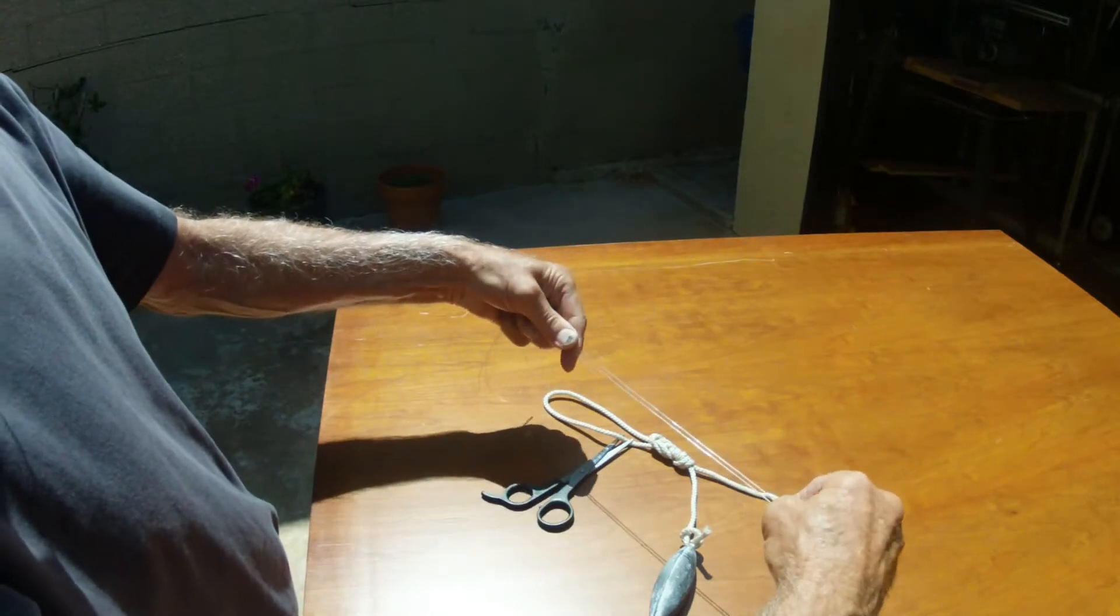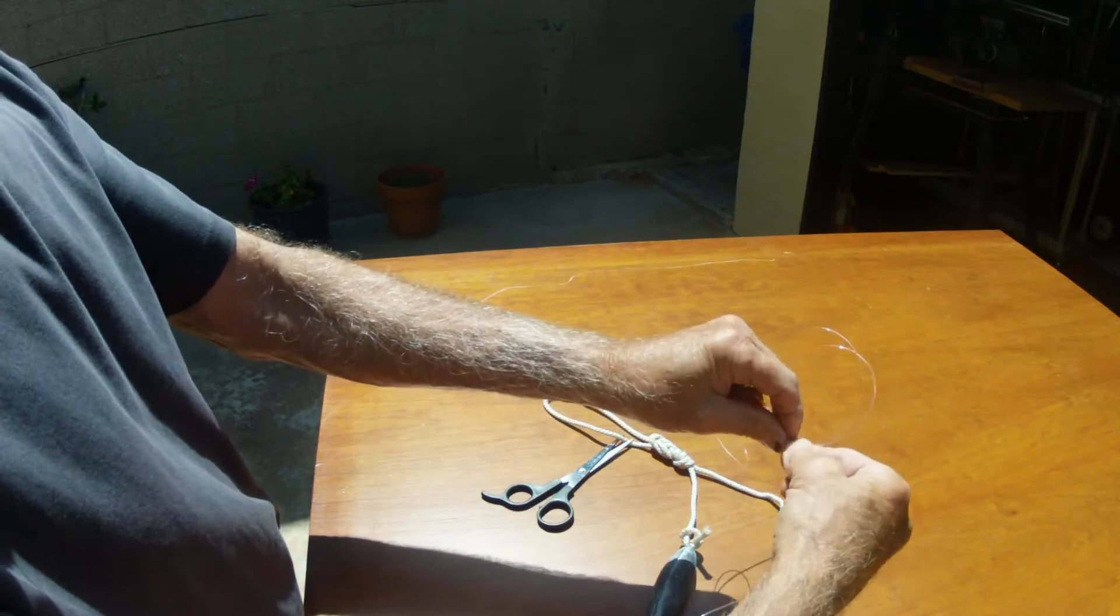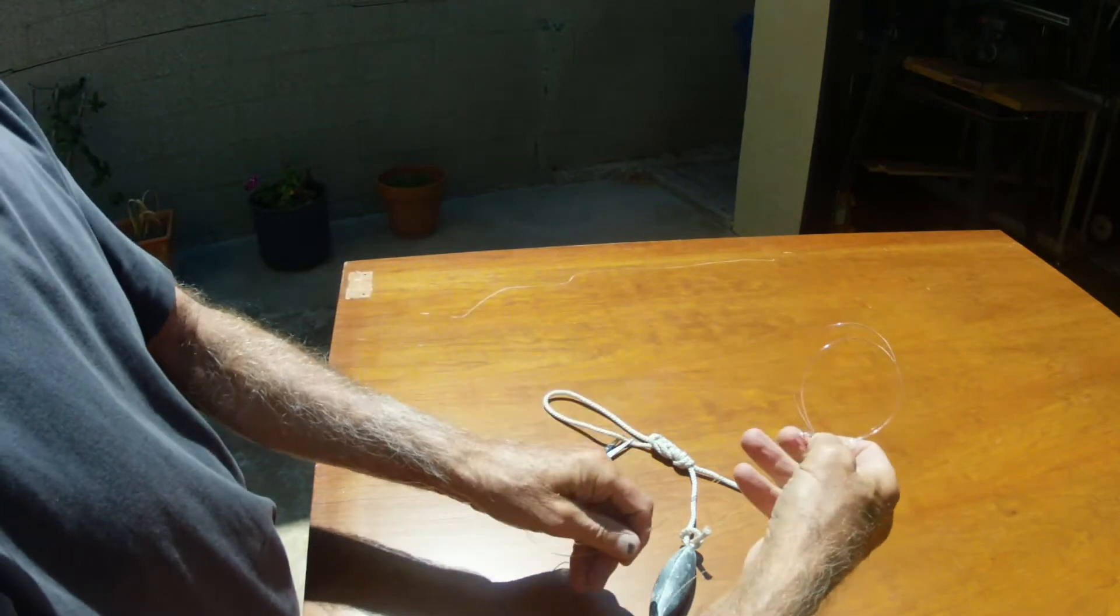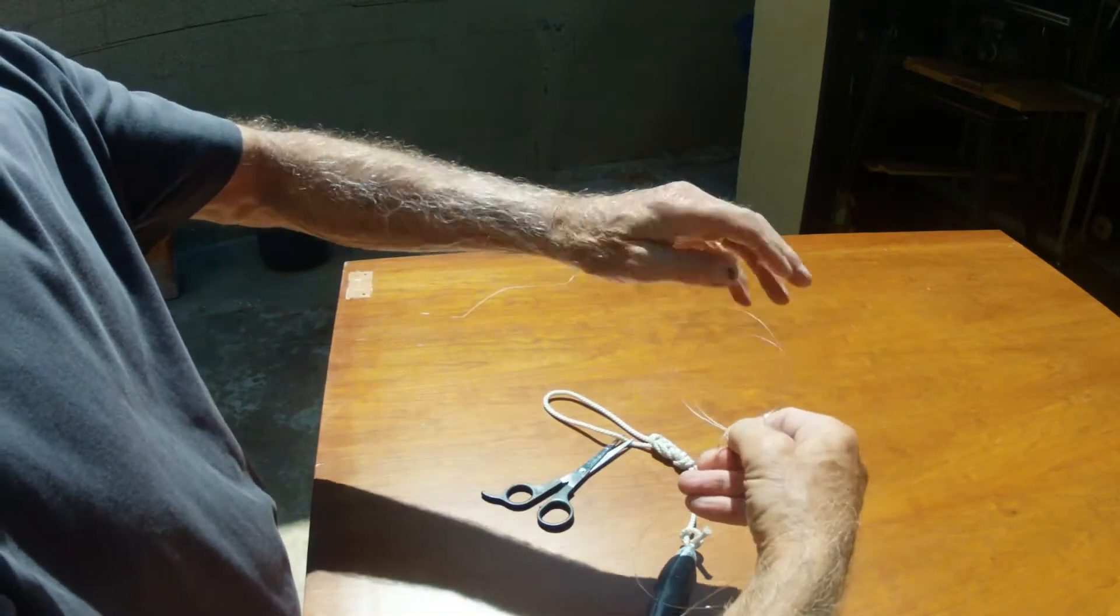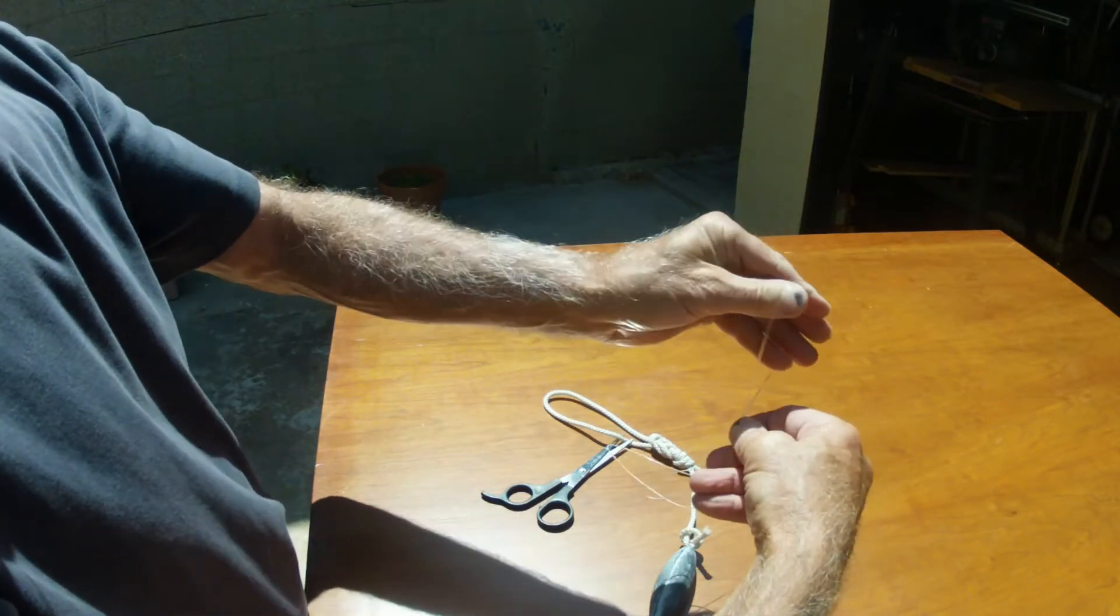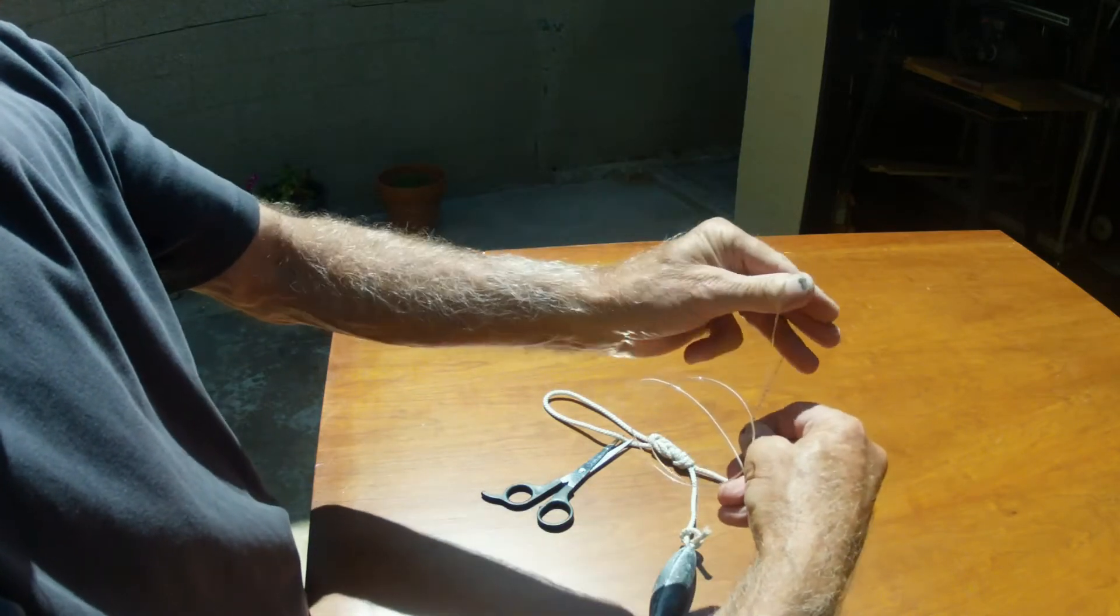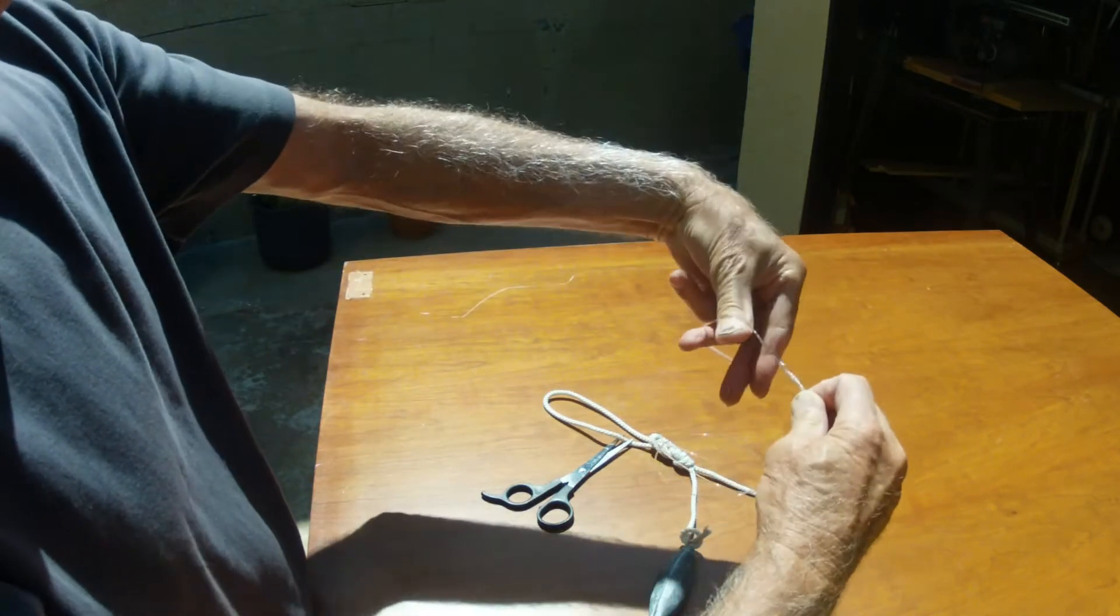Just one large loop, and then you make a small loop, just a very easy small loop. You twist it three times—one, two, three—and then you pull the large loop through it.